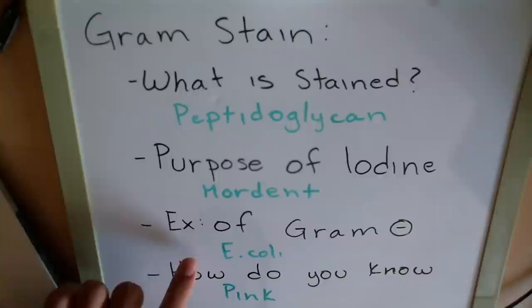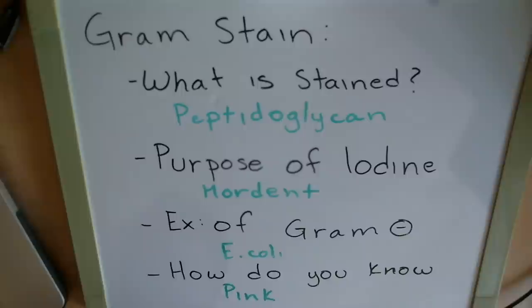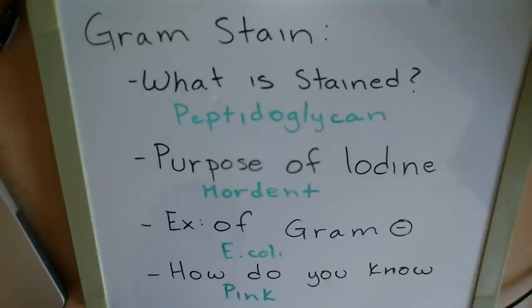If you know all the concepts, you should not be getting anything less than a 75 on this test. The best way to study is to know the concepts, because that's 75% of the test, and then go back and remember a few positive and negative results, giving you the other 25%. Not every question is going to ask you for an example, but each question is going to ask you to explain the concept behind either the whole lab or any given step — that's where all your points are going to come from.